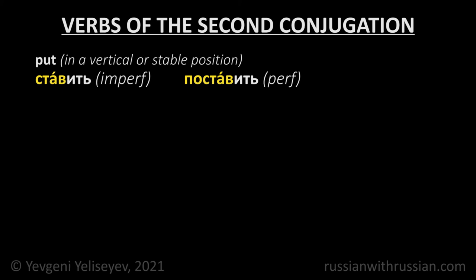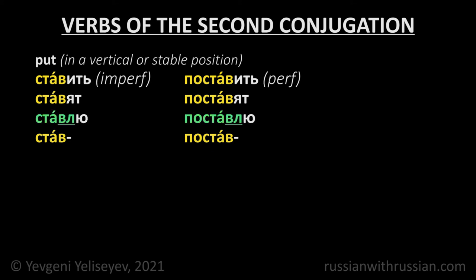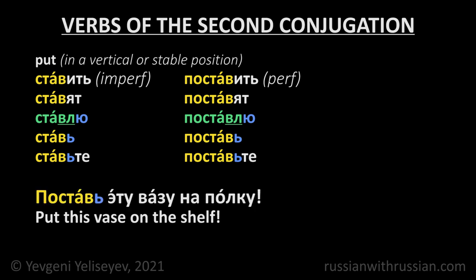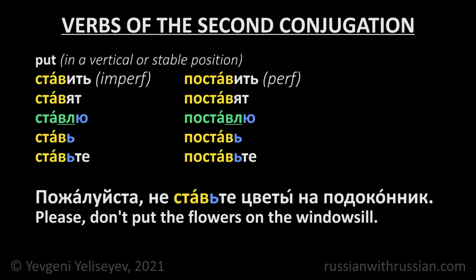Ставить / Поставить — To put in a vertical or stable position. Они ставят / Они поставят — the stem is СТАВ / ПОСТАВ. Я ставлю / Я поставлю — the ending is unstressed and the stem ends in a consonant, so the informal imperative form ends in soft sign: Ставь, Ставьте or Поставь, Поставьте. Поставь эту вазу на полку — Put this vase on the shelf. Пожалуйста, не ставьте цветы на подоконник — Please don't put the flowers on the windowsill.